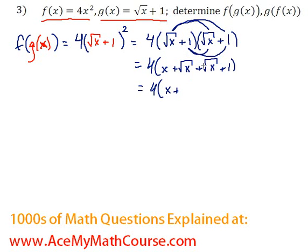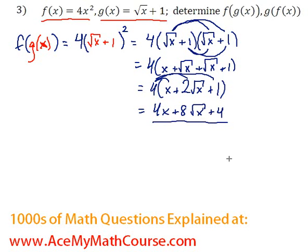So root x plus root x is just 2 root x. And now we can distribute the 4 to simplify. So 4 times x is 4x, 4 times 2 root x is 8 root x, and 4 times 1 is just 4. And that's it.